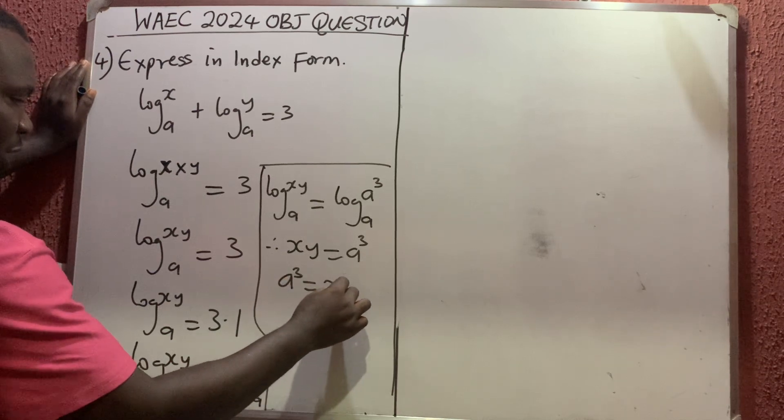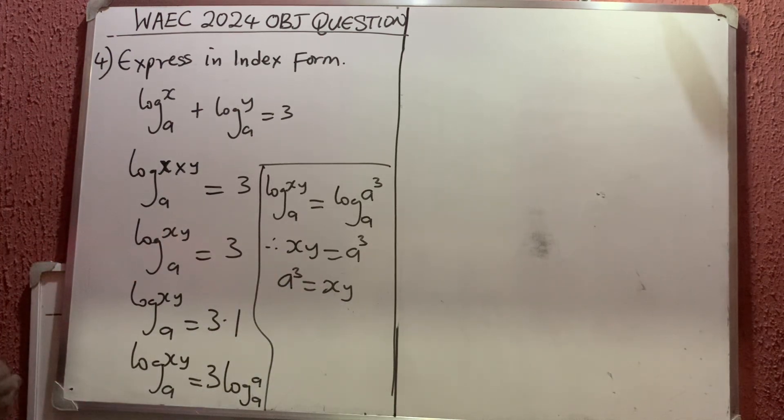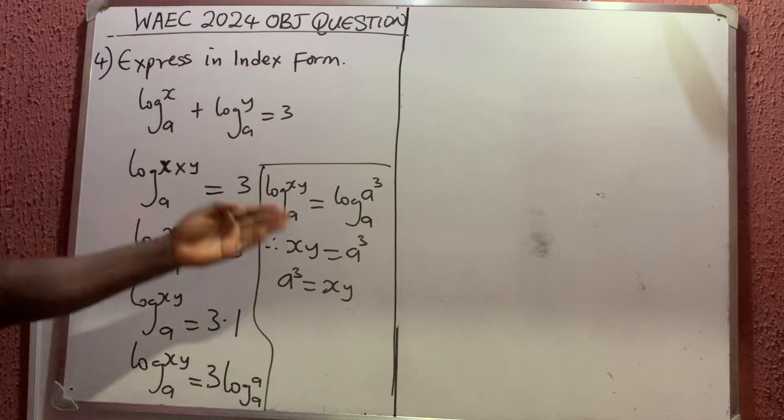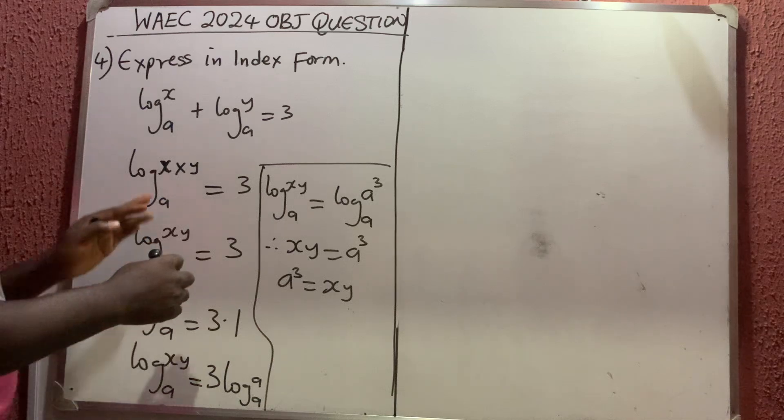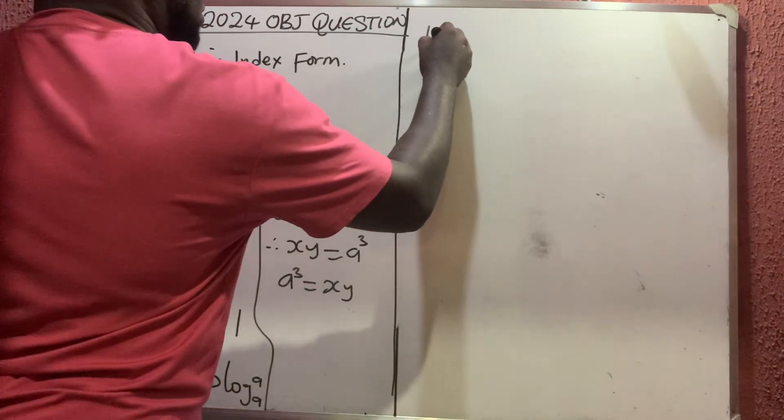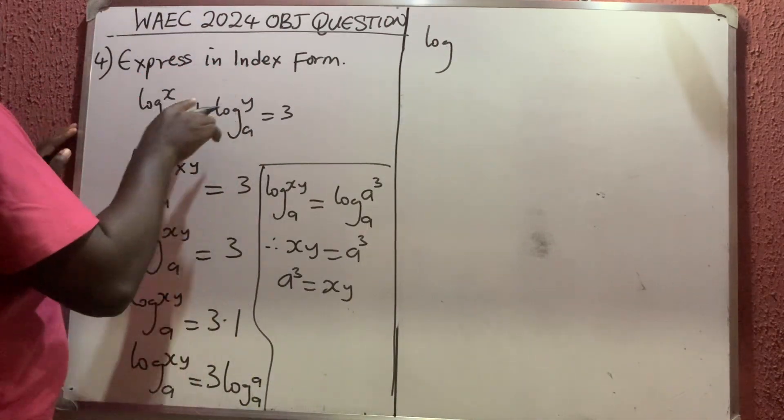Now if you don't want to use all this long process, what you have to do is from this place, I have that this is log. Let us do it alternatively. This is log xy base a equals 3.